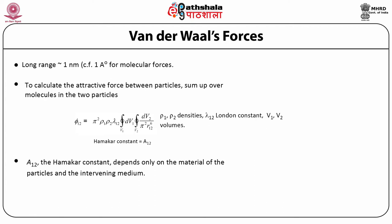The Hamaker constant is a function of only the two materials and the medium separating them. The values of the Hamaker constant for some ceramics in water are on the order of 10^−30 joules. For TiO₂ it is 26 × 10^−30 J, and similarly for Al₂O₃ and MgO.